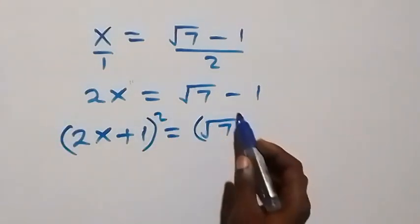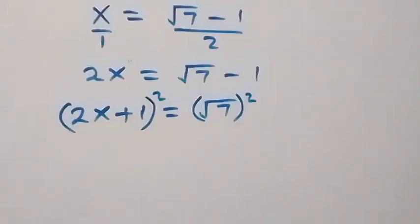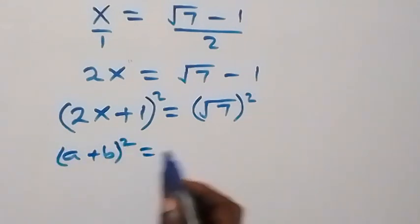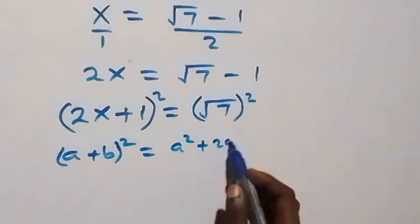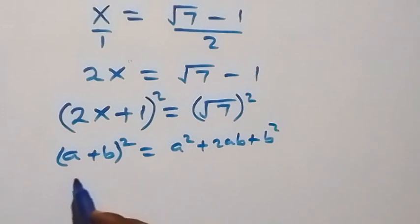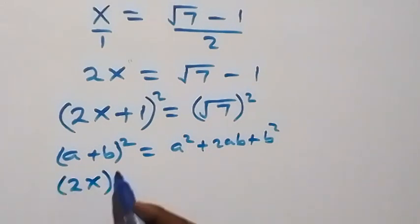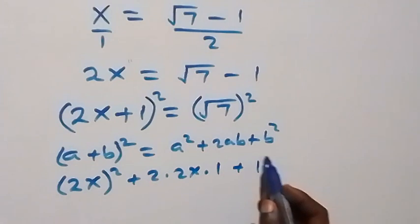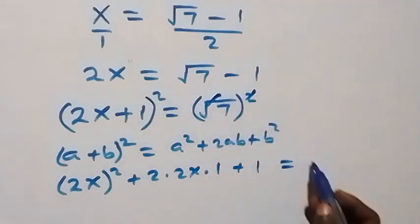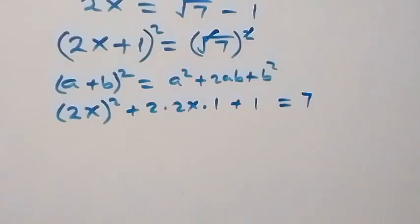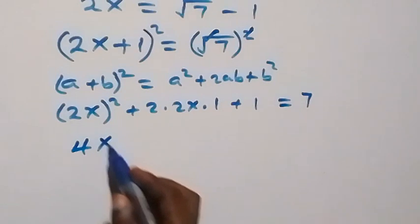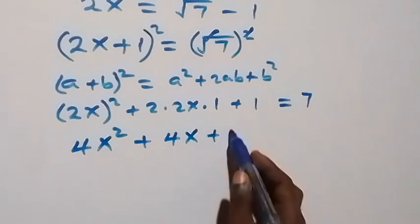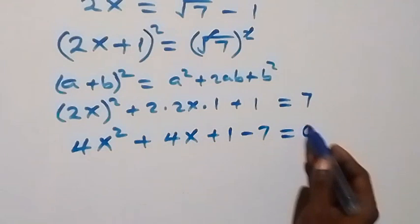We square both sides and the expansion follows: (a + b)² = a² + 2ab + b². So we have (2x + 1)² = (√7)², which gives 4x² + 4x + 1 = 7. Taking 7 to the left side gives 4x² + 4x + 1 - 7 = 0.